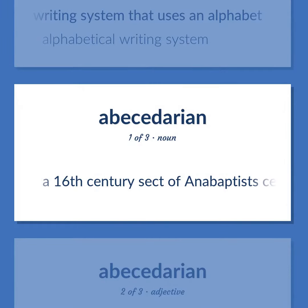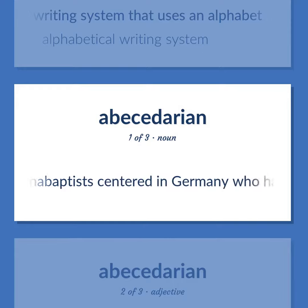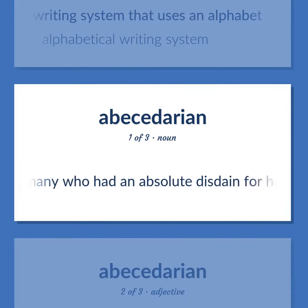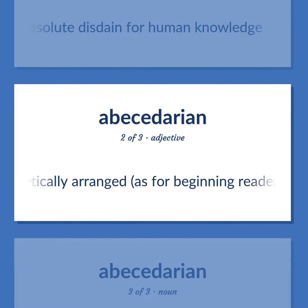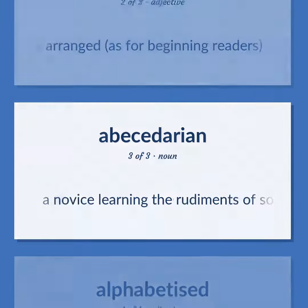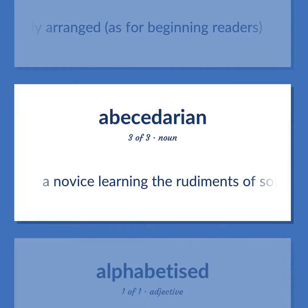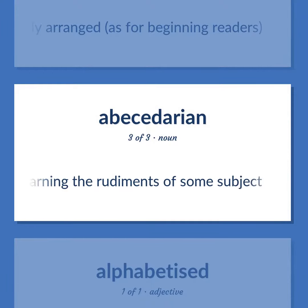Abecedarian: a 16th-century sect of Anabaptists centered in Germany who had an absolute disdain for human knowledge. Also means alphabetically arranged, as for beginning readers, or a novice learning the rudiments of some subject.